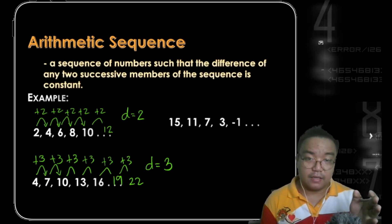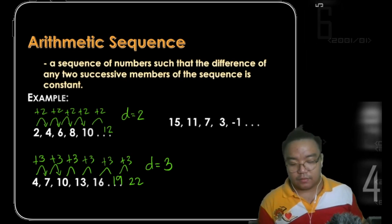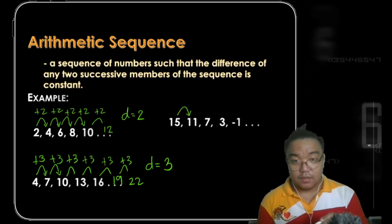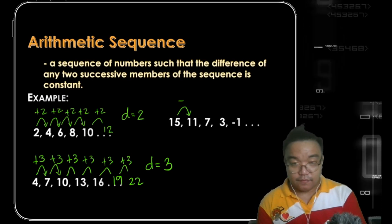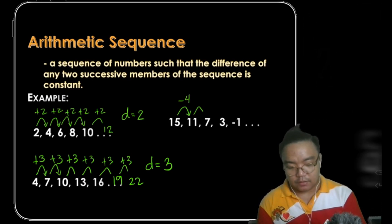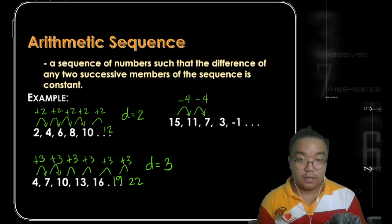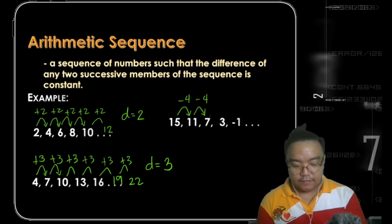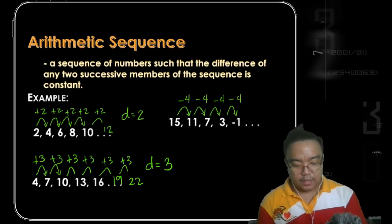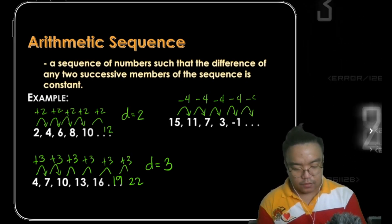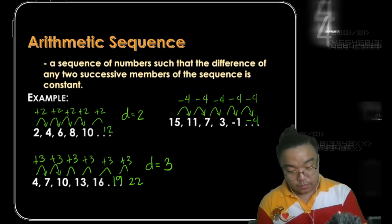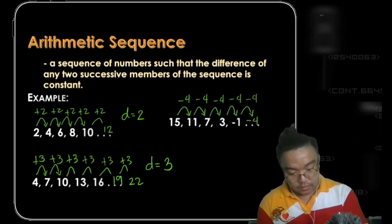One more example with decreasing numbers: 15, 11, 7, 3, negative 1. From 15, we subtract 4 to get 11. From 11 going to 7, we subtract 4. From 7 going to 3, same pattern — we subtract 4. If we continue subtracting 4, the next number would be negative 5.